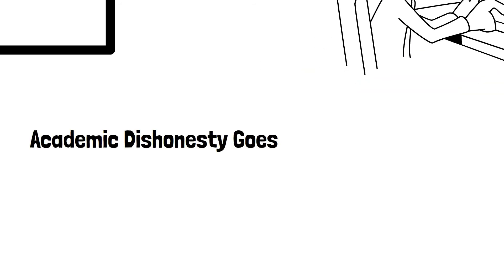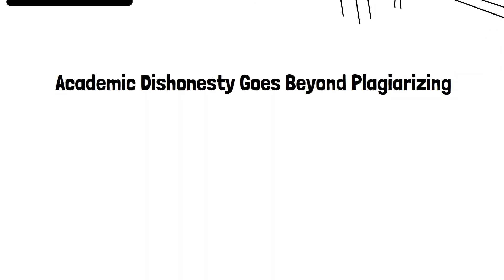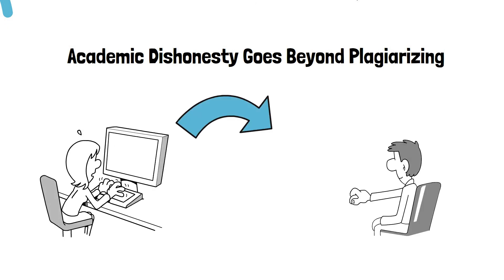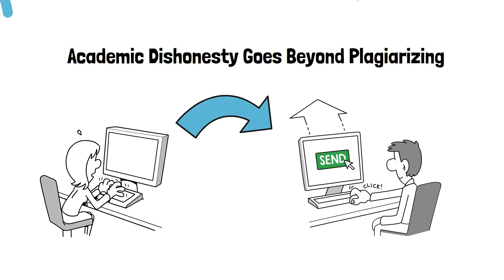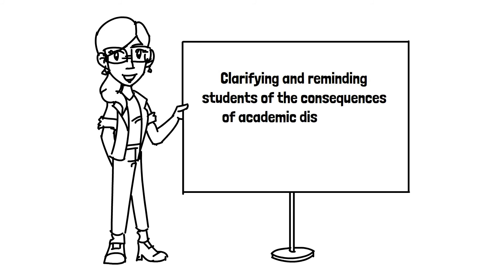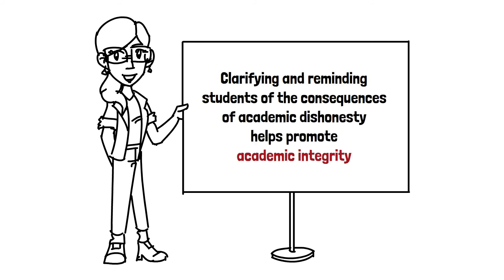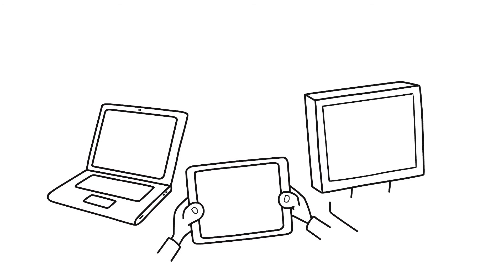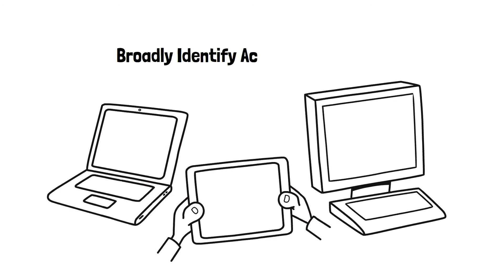Academic dishonesty goes beyond plagiarizing. For example, students can use someone else's assignment or have someone else do their assignment. Clarifying and regularly reminding students of the consequences of academic dishonesty helps promote academic integrity. Additionally, depending on school policies, student device monitoring tools can also be utilized to broadly identify academic dishonesty and promote integrity.